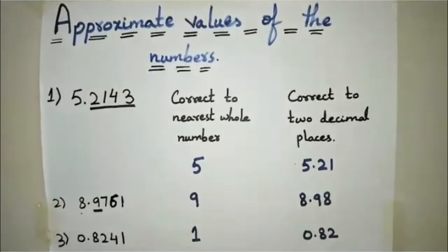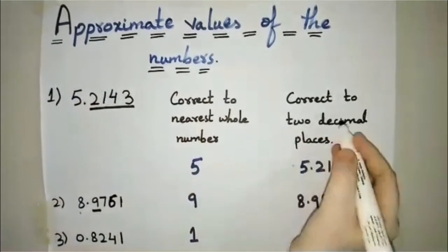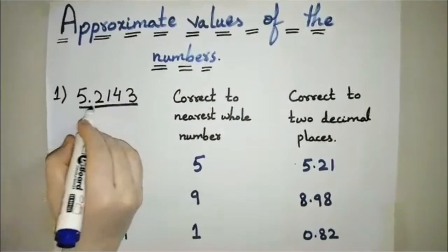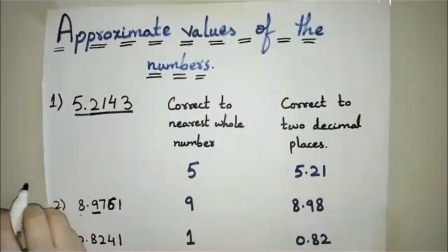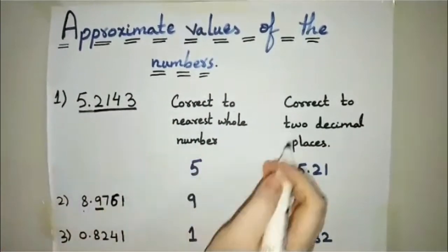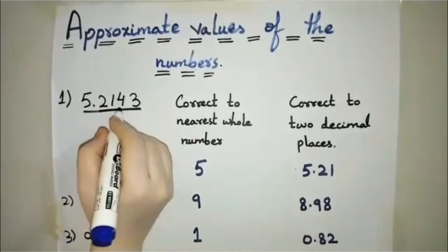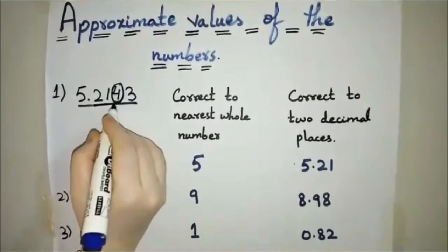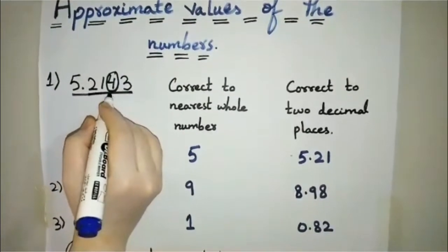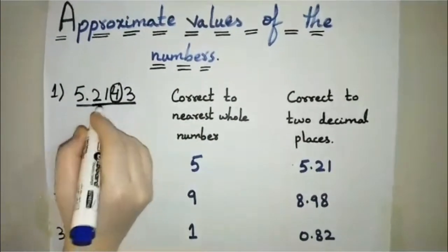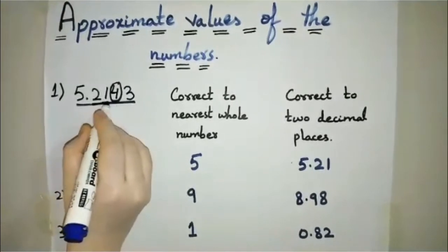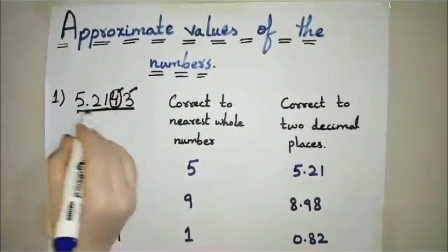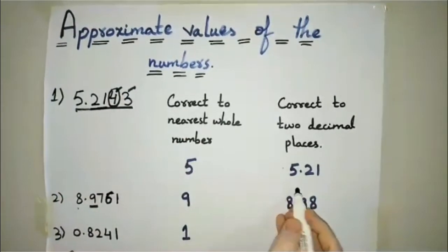Now we find the approximate value correct to two decimal places. To round 5.2143 to two decimal places, we observe the third decimal place digit. That digit is 4, which is less than 5, so we do not add 1 to the second decimal digit and simply drop the remaining numbers. 5.21 is the answer.